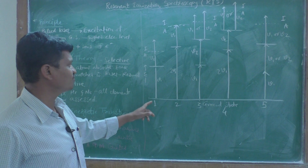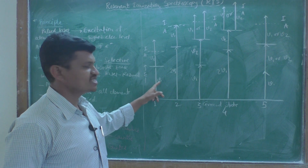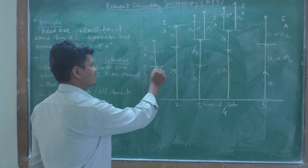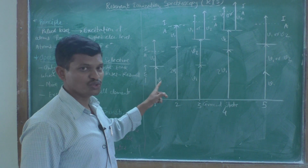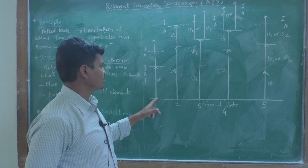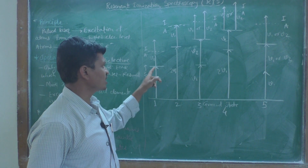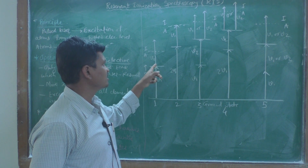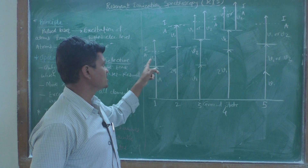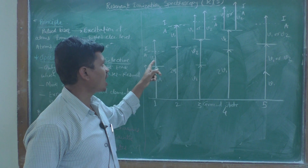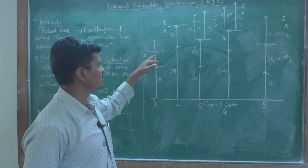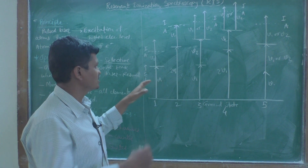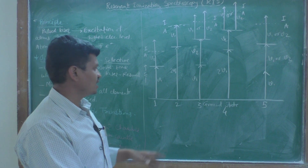Five different schemes have been described. In Scheme 1, a laser of frequency ν₁ is used to excite ground state atoms to a higher electronic level. Then a second laser of frequency ν₂ is used to ionize the excited atoms into ions and electrons.